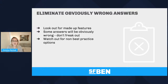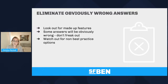For example, if you saw a question about creating an approval process and your options were to use the standard approval process tool or to use Salesforce Flow, you shouldn't use Flow when there is a standard approval process feature — even though Flow could technically do it.